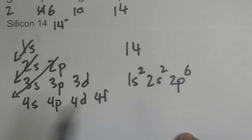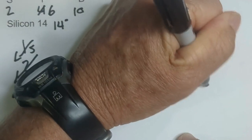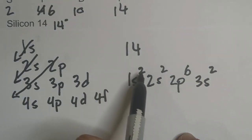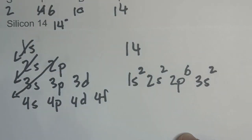So we have 2p⁶, and then we are at 3s². Let's see how many electrons we're at, we're at 4, 10, 12. And so now we will go to 3p.